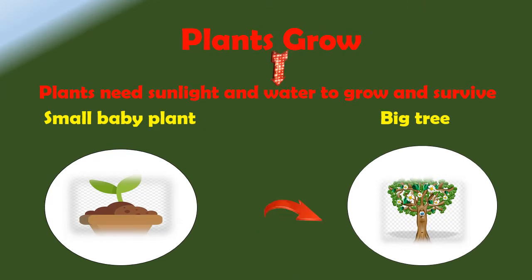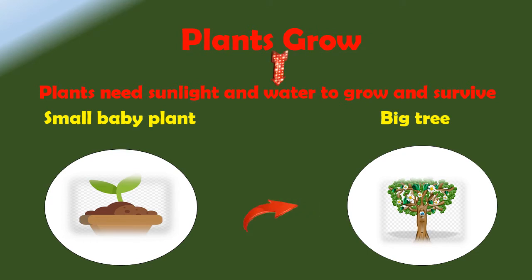Plants need both sunlight and water. It is important that they get sunlight and water because they need it so that they can grow and also to survive.